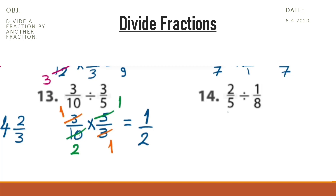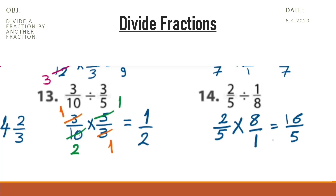In question 14, write the dividend as it is, change to multiplication, find the reciprocal, and simplify. 5 and 8 don't have a common factor, so multiply: 2 multiplied by 8 is 16 and 5 multiplied by 1 is 5. The numerator is greater than the denominator, so write this as a mixed number. Divide 16 by 5 — it's 3, because 3 multiplied by 5 is 15, and the remainder from 16 is 1. The answer is 3 and 1 fifth.